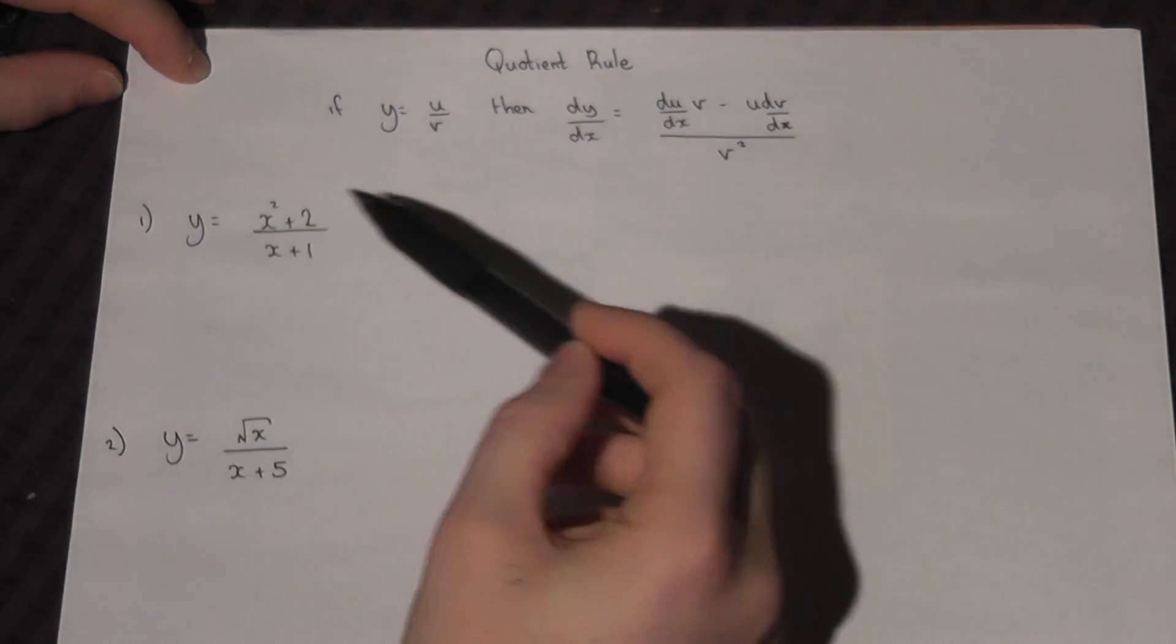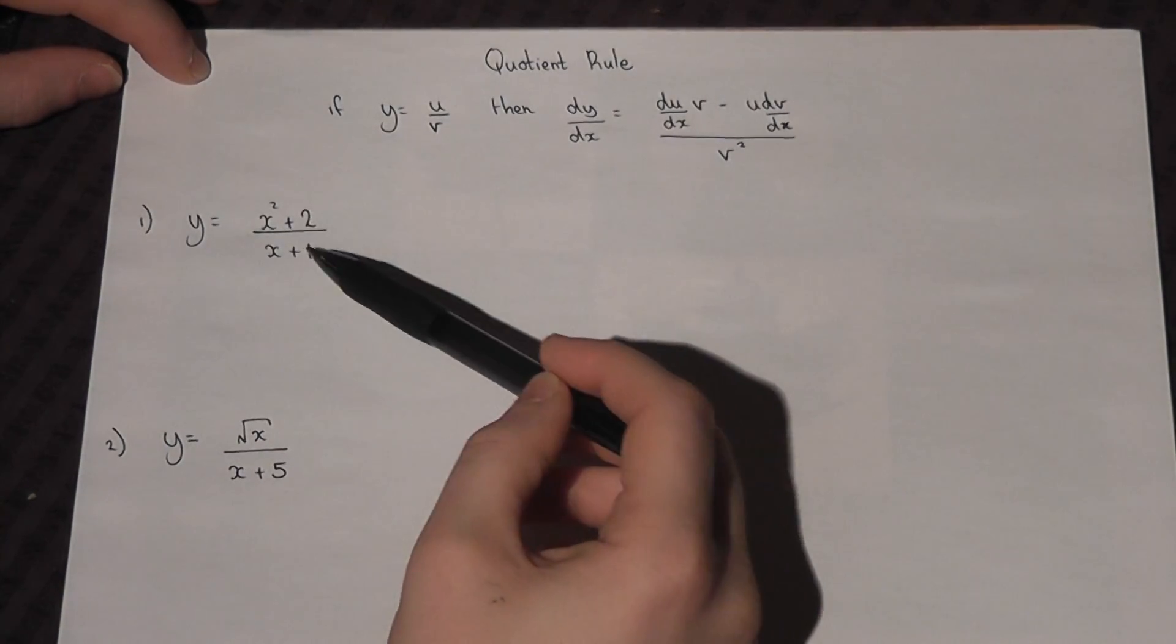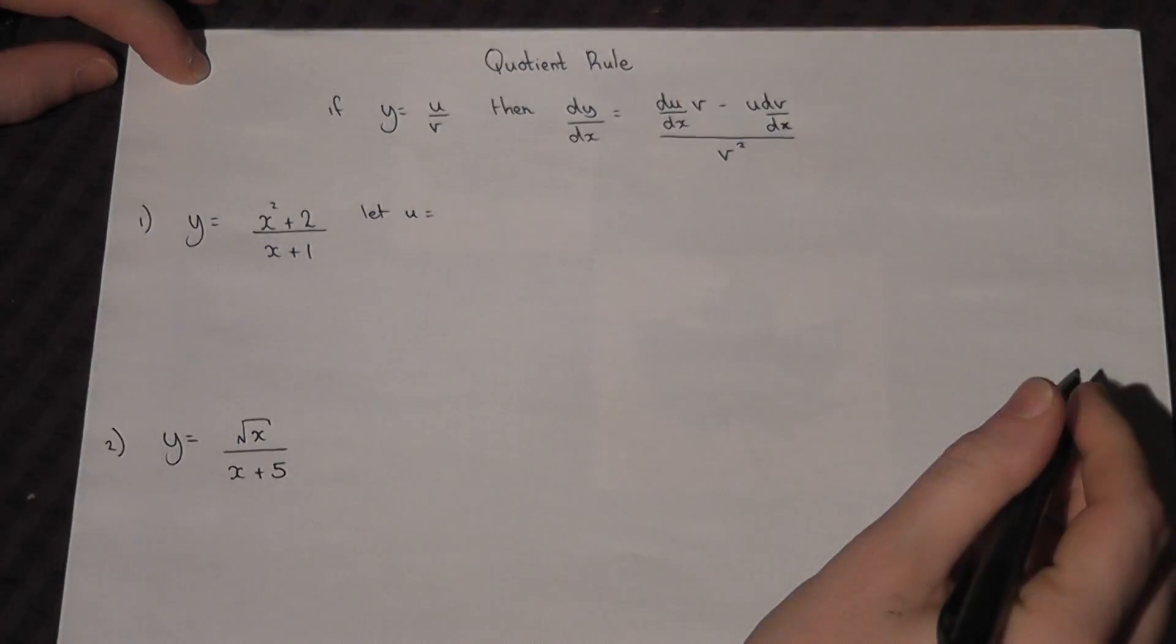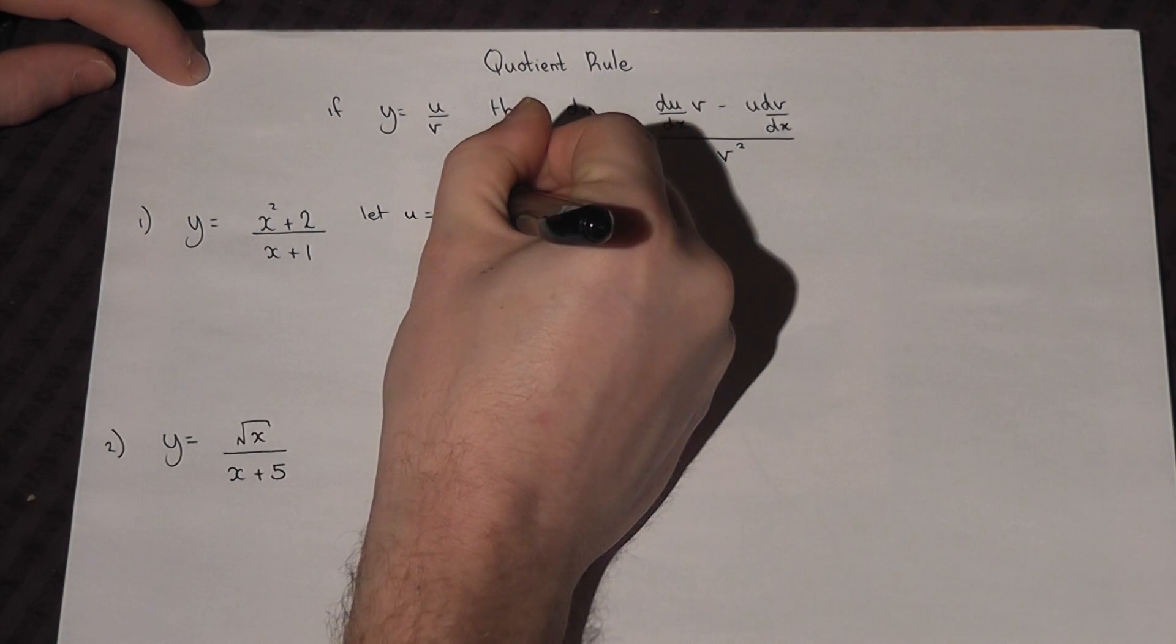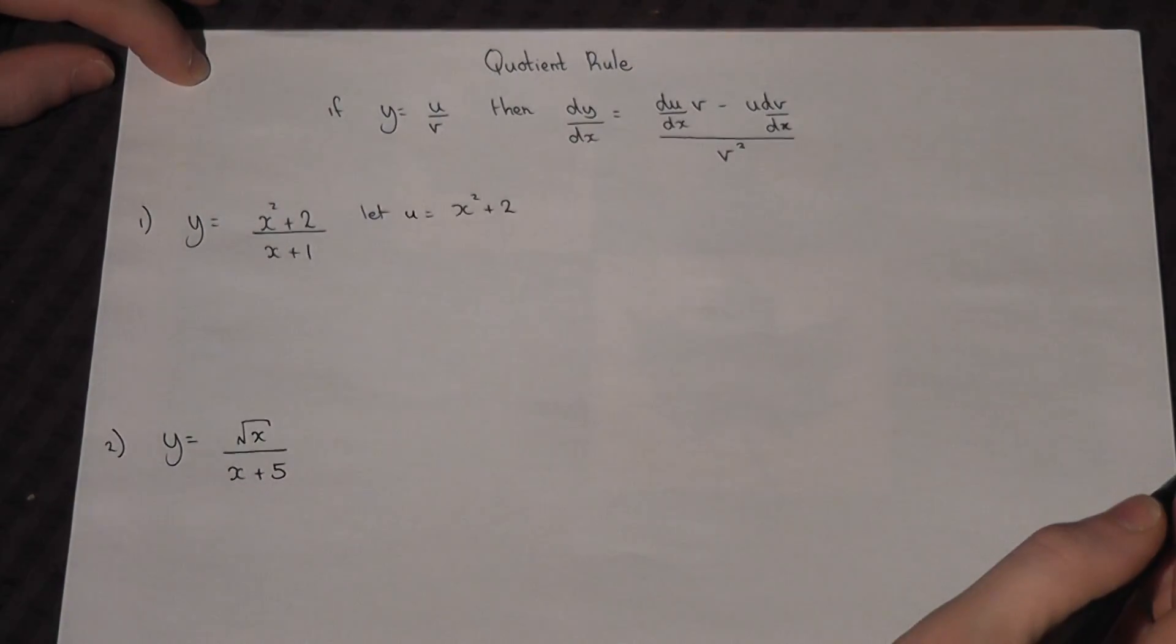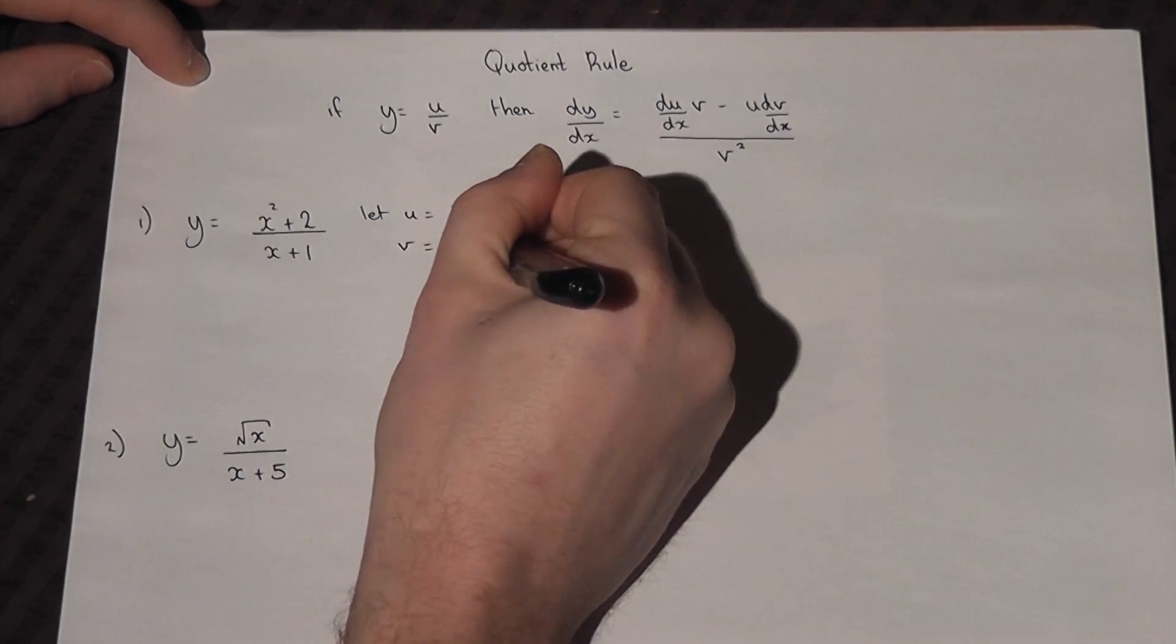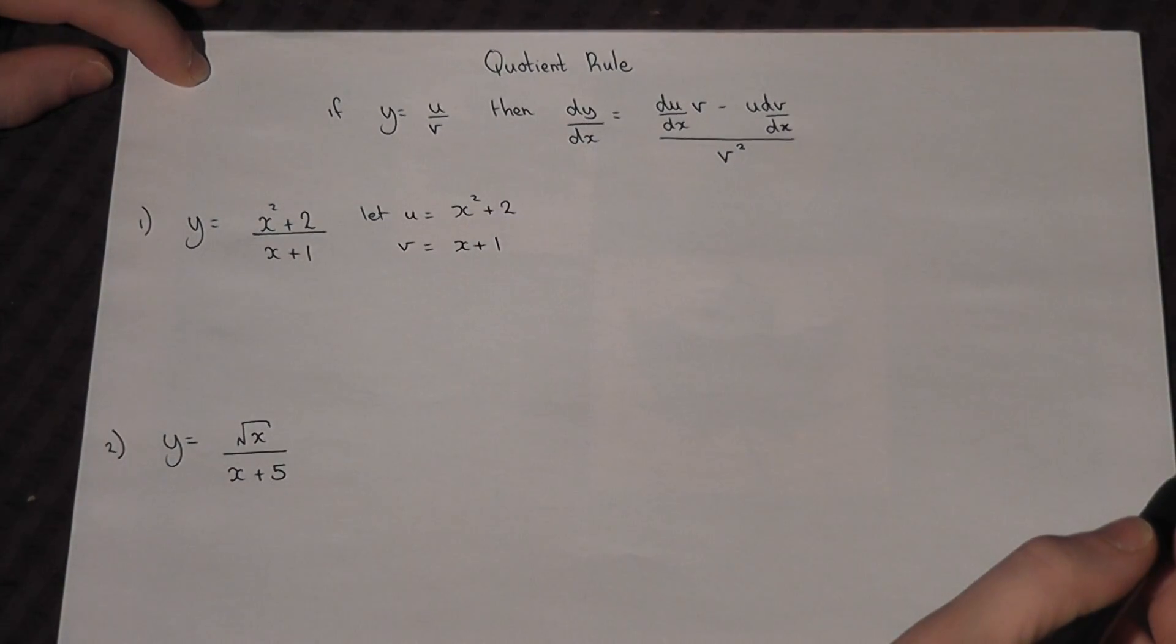So if we've got a fraction, we let u equal the top, so x squared plus 2, and we let v equal the bottom, so x plus 1.